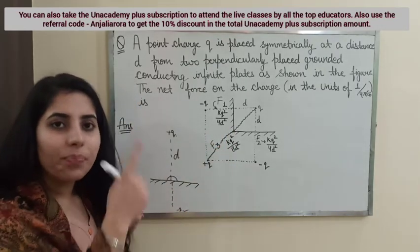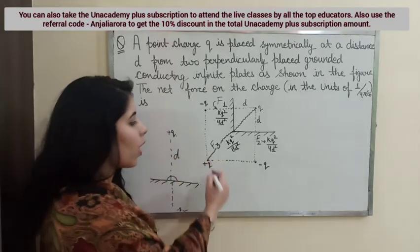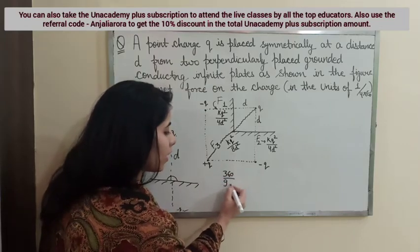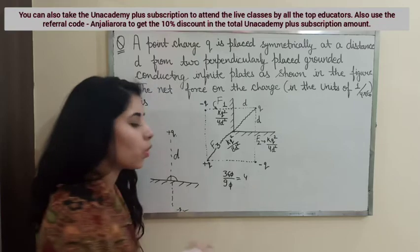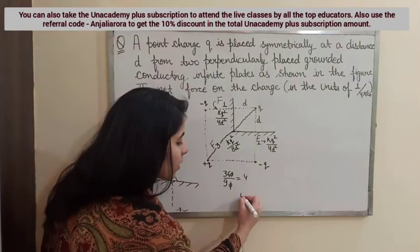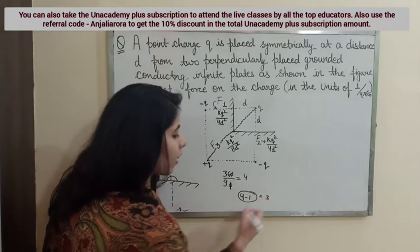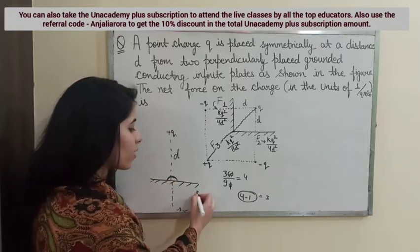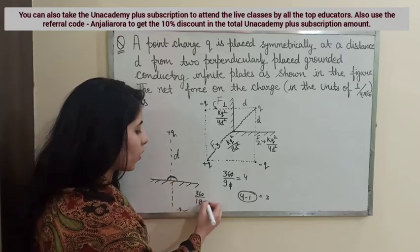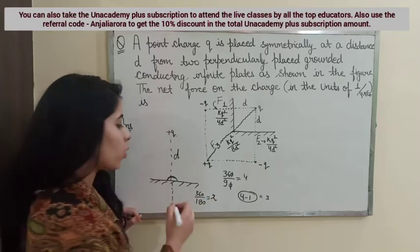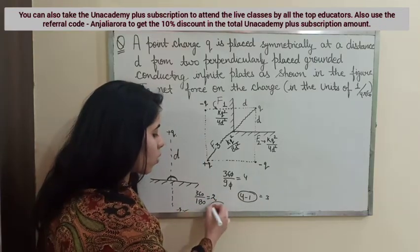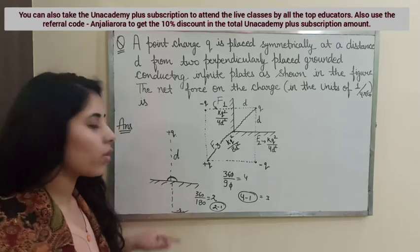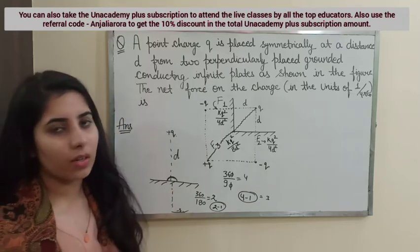In our situation, how many grounded conducting sheets are present? Two, and the angle between them is 90 degrees. So 360 divided by 90 gives 4. The number of image charges will be 4 minus 1, that means 3. Similarly, if the angle were 180 degrees, 360 divided by 180 gives 2, and you get 2 minus 1 — only one image charge. Whatever value you get from dividing 360 by the angle, subtract 1 to find the number of image charges.